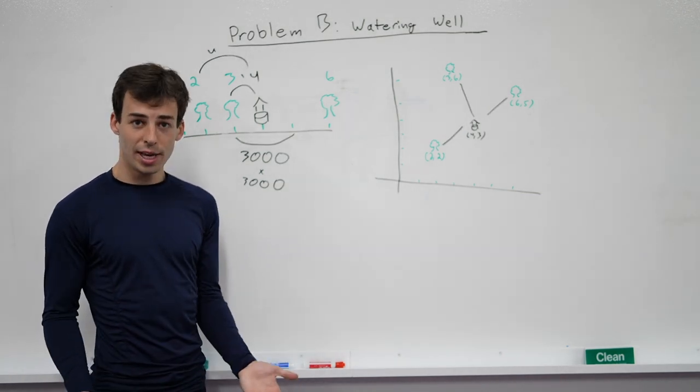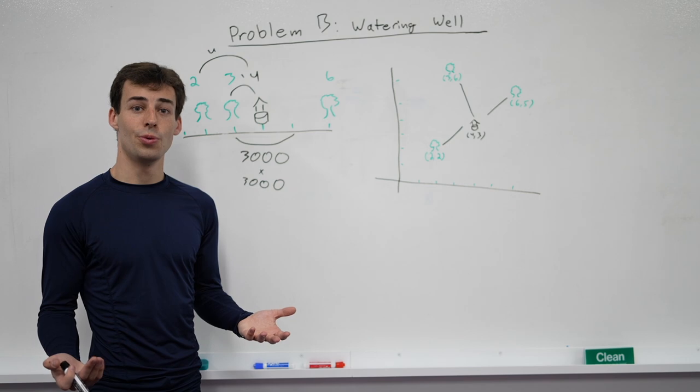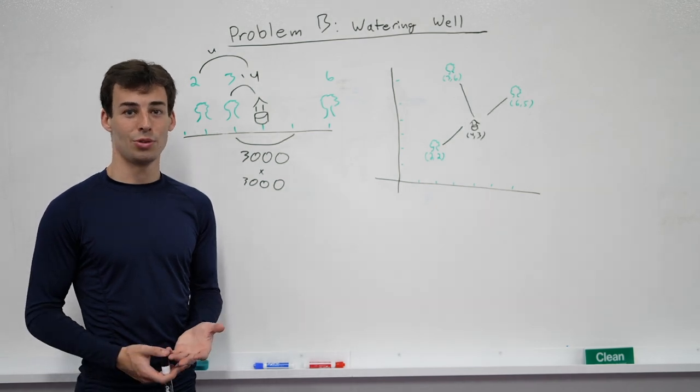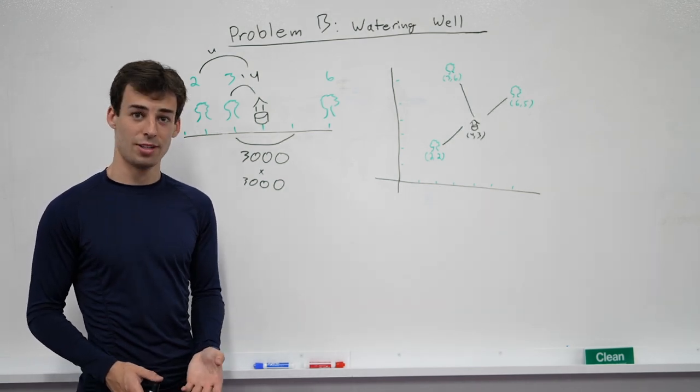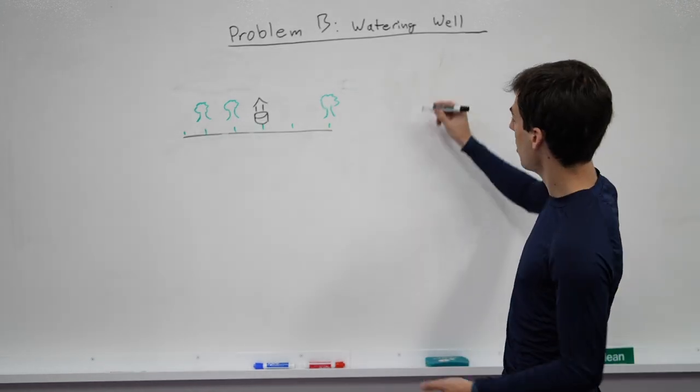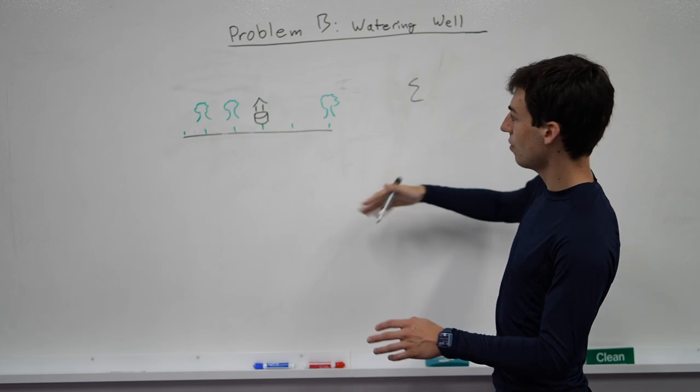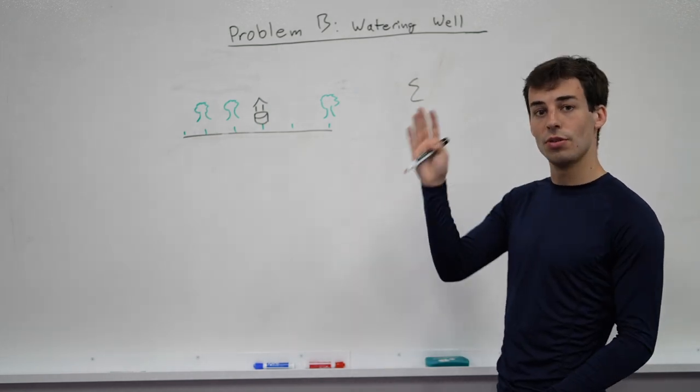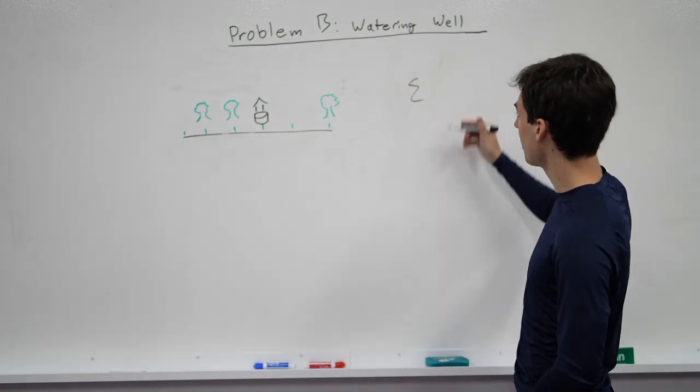But B2, obviously we can't do that because we have quite a few trees, quite a few wells, and also quite a few x-coordinates. So for B2, we're going to go back to the formula and see what we can do from there. So the idea here is we're still going to use the fact that the coordinate systems are independent. We have one answer for x, one for y. We'll just add them together back at the end.